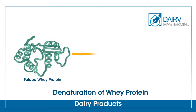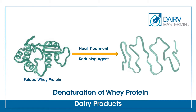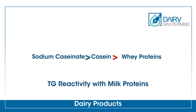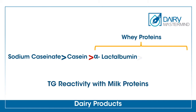Whey protein can become a good substrate when its structure is unfolded by heat treatment or when a reducing agent is used. There are also differences in the reaction with TG between different types of casein as well as whey proteins. In caseins, for example, sodium caseinate is more affected by the reaction with TG enzyme. Among whey proteins, alpha-lactalbumin is more affected than beta-lactoglobulin.